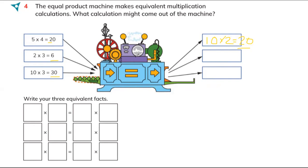For example, you get here 10 multiplied by 2 equals 30, so here you write 10 multiplied by 2 equals 30.